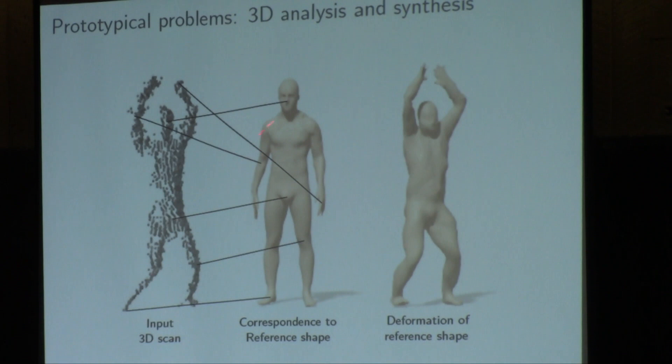The second problem: once we found this correspondence, we want to generate a new pose for this canonical face. We want to synthesize a new pose — basically find the positions of the points of this canonical mesh. Let me start from this problem and then talk about mesh generation as well.